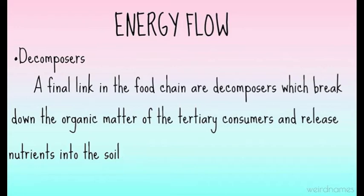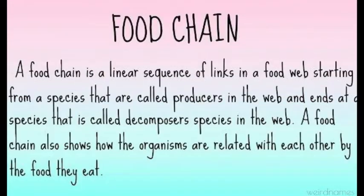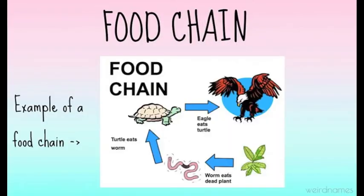A food chain is a linear sequence of links in a food web, starting from species called producers and ending at a species called the decomposer species. A food chain also shows how organisms are related to each other by the food they eat. For example: the worm eats a dead plant, the turtle eats the worm, and the eagle eats the turtle.